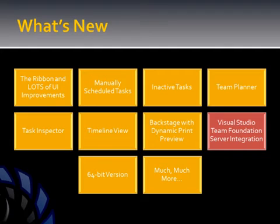Inactive tasks. A team planner capability that allows you to visually fix resource over-allocations. A new task inspector capability that looks at how tasks are formed and how resources are assigned to tasks, and actually gives you some feedback as to how to improve your schedule. A new timeline view that allows you to output your project in a very rich, compelling way that's not necessarily looking like a Gantt chart.